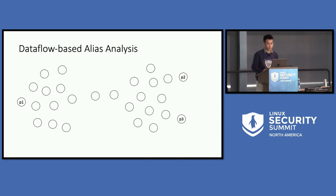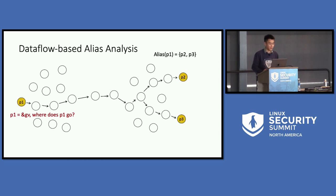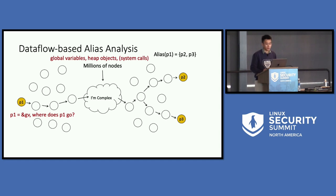Let me introduce the dataflow-based methods. Assume there is a pointer p1 in the Linux kernel — it could be the address of a global variable, or it points to a global variable initially. To figure out the aliases of this global variable, we need to figure out where p1 goes. The dataflow analysis is straightforward: it looks for the dataflow of p1, and if it flows to p2 and p3, then p2 and p3 may point to the global variable. But in the Linux kernel it will be much more complex. The dataflow might go through millions of nodes across many global variables, heap objects, system calls, and so forth, making the situation much more difficult. Intuitively, dataflow analysis cannot finish in a reasonable time.